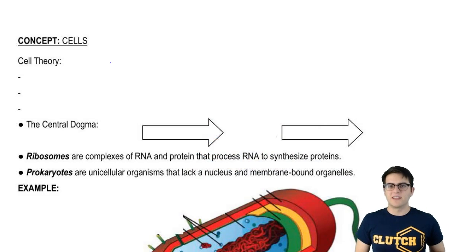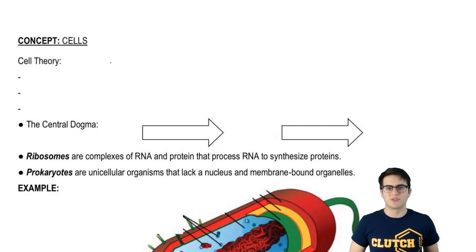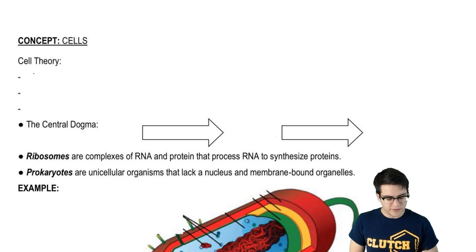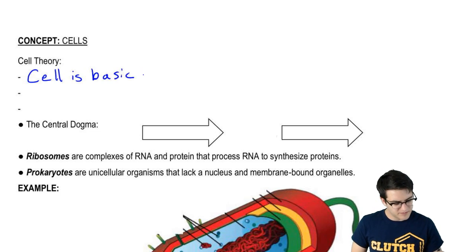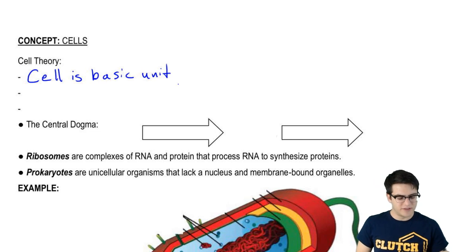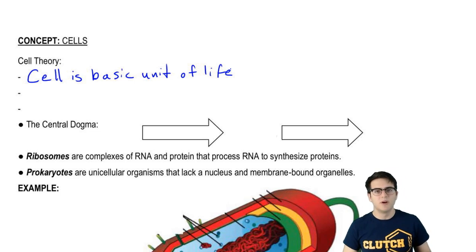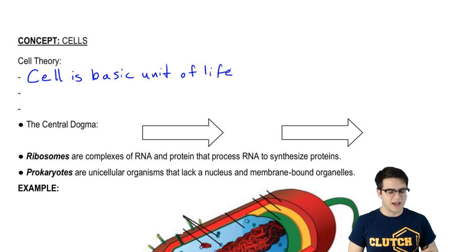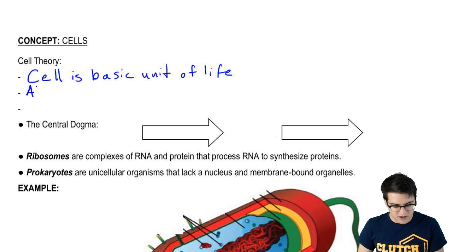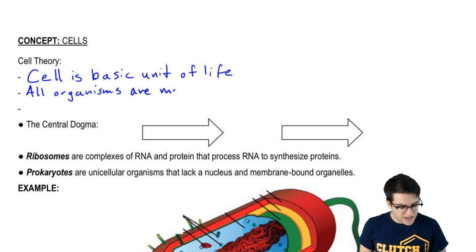Cell theory is a set of three principles that aim to describe cells. The first tenet is that the cell is the basic unit of life. If the cell is the basic unit of life, that means that all organisms must be made of cells, whether you're a single-celled organism or a multicellular organism like you and I. And that is the second tenet: all organisms are made of cells.